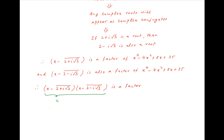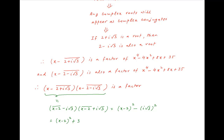The product [x - (2 + i√3)] × [x - (2 - i√3)] can be written as (x - 2 - i√3)(x - 2 + i√3), which equals (x - 2)² minus (i√3)², and this equals (x - 2)² + 3, which simplifies to x² - 4x + 7.